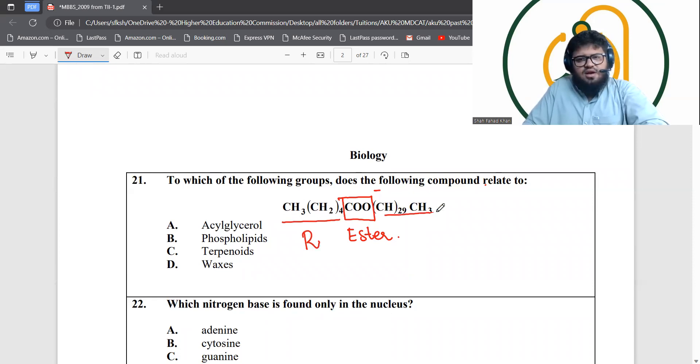The R group after the ester is also a long chain having 29 carbons. Such configuration actually belongs to waxes. Waxes are esters, but in such esters the part before the ester group comes from alcohol. Waxes have alcohols with long hydrocarbon chains. These alcohols are not glycerol, these are mono alcohols but with long hydrocarbon chains.